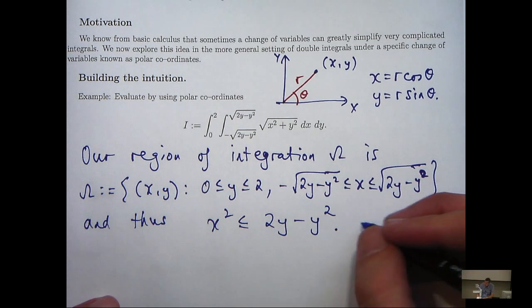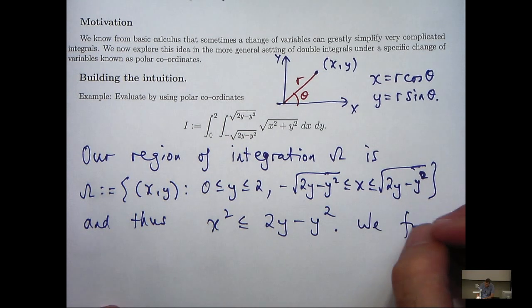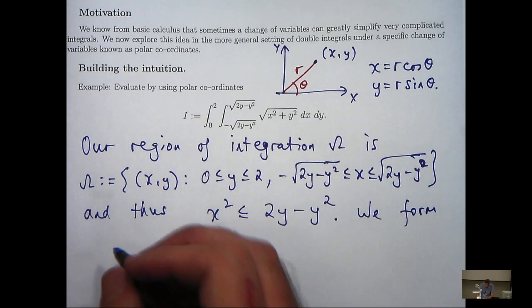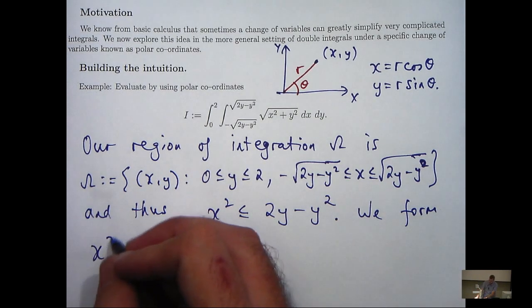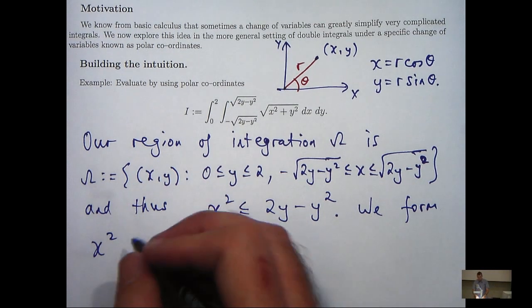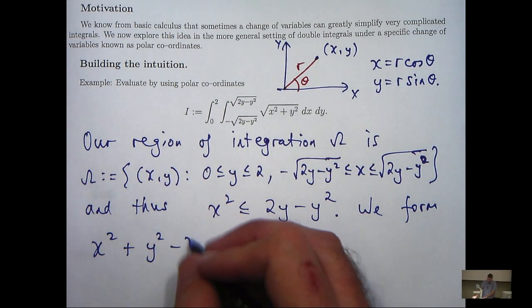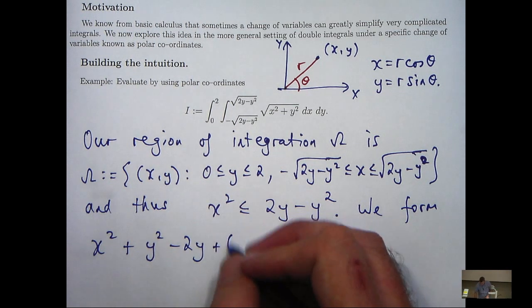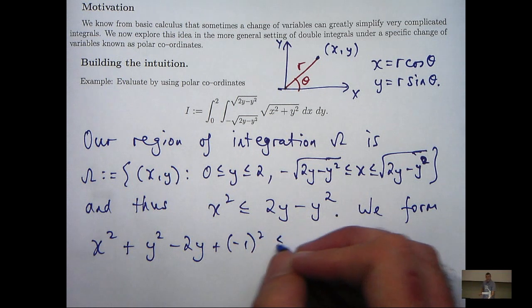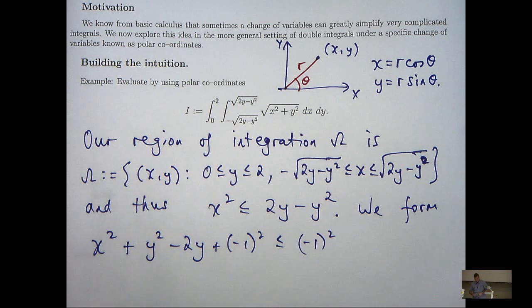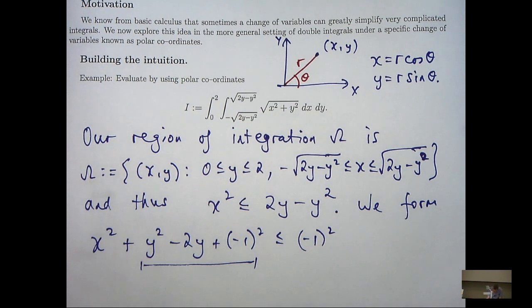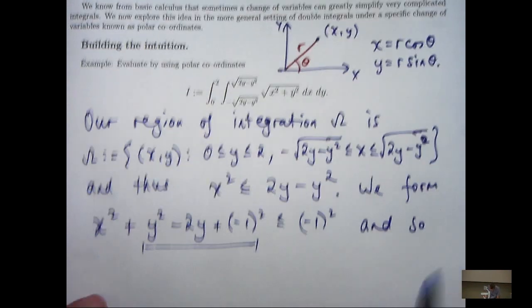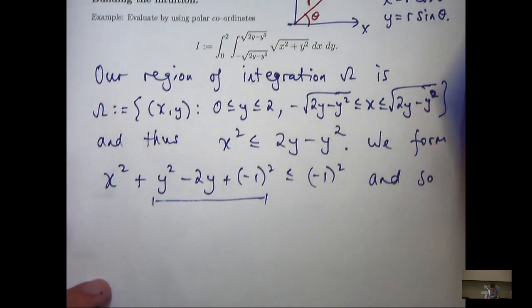So let's rearrange. And then if I rearrange and complete the square in y, I'm going to get the following. So I take half the coefficient of y, square it, add it, and then add it to both sides. So over here I now have a perfect square. So I can factorize here and form something that you should recognize.